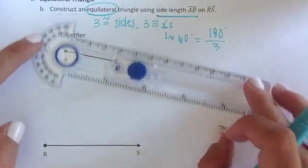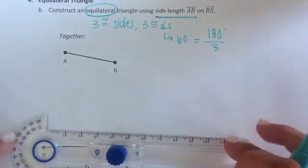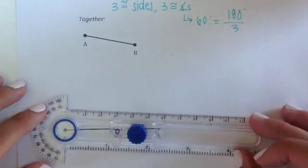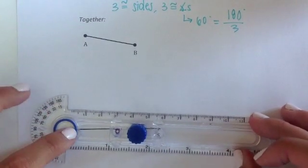Now to use that side length on RS, I'm going to bring it down and put my center on endpoint R.